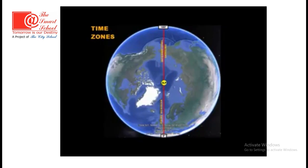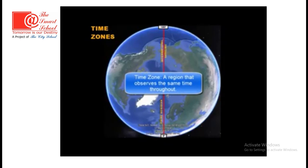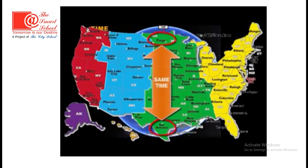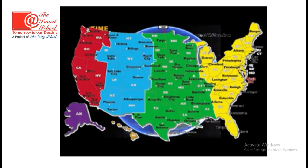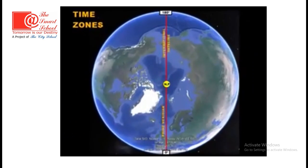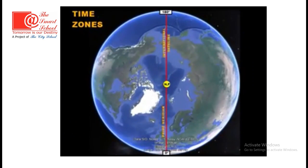A time zone is a region or an area that observes the same time throughout. No matter how north or south you are in a time zone, you are going to experience the same time. It's not until you cross over another line of longitude where a new time zone begins. Here is a picture of the earth from a bird's eye view — imagine you're floating in space above the earth looking straight down at the North Pole. We have our two major longitude lines.